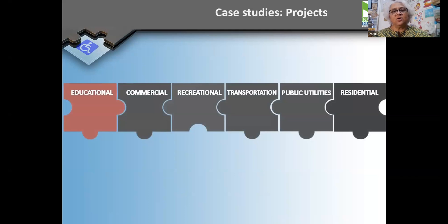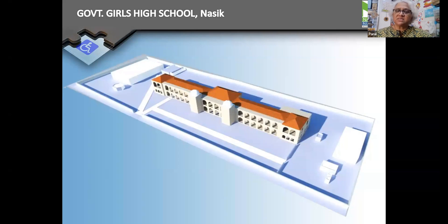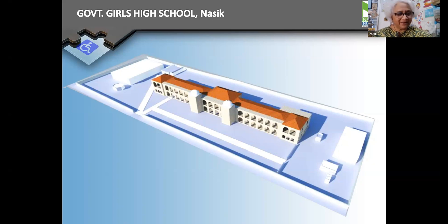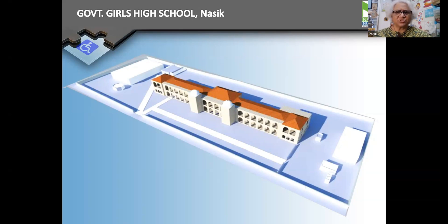I want to give you one example of each typology I have addressed over the last three-plus decades, starting with education. This is Government Girls School in Nashik. It is a heritage institution, functional for over 100 years, and many well-known women of Maharashtra have been educated here. This is the layout that existed before our interventions — there was no clear distinction between pedestrianized areas and vehicle areas; it had grown very organically.